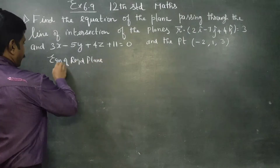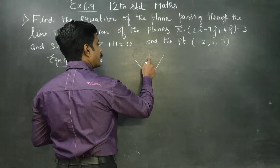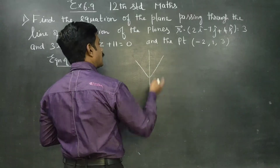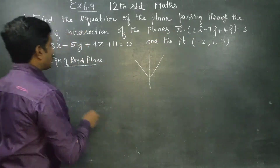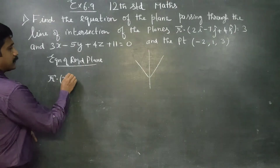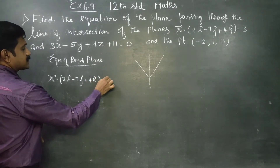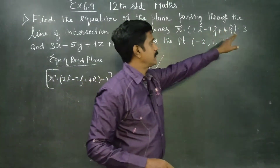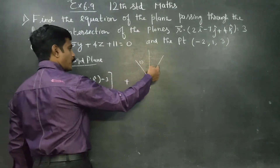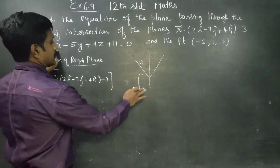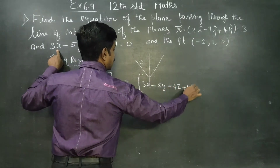Equation of required plane: this side will be plane one and this side will be plane two. The formula involves r-vector dot (2i minus 7j plus 4k) minus 3. This is the first plane equation. Now I am going to write the second plane equation: 3x minus 5y plus 4z plus 11.